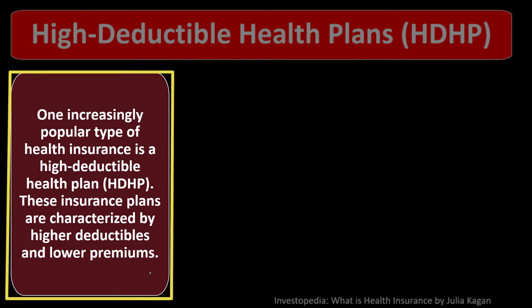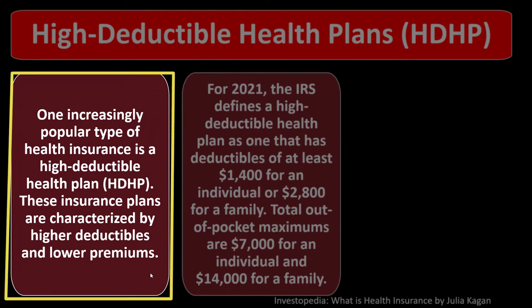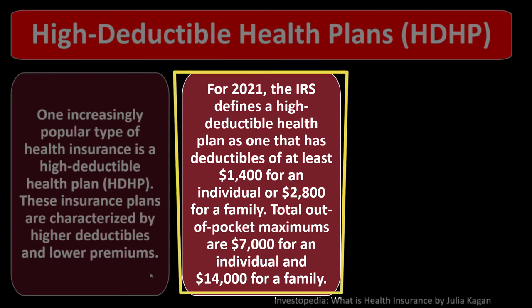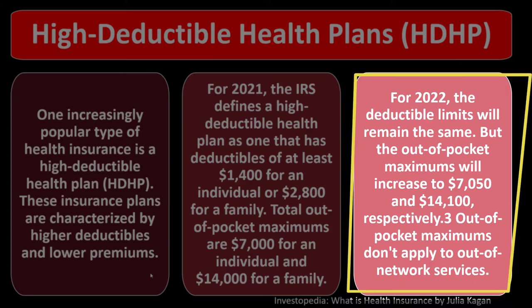High deductible health plans (HDHPs) are characterized by higher deductibles and lower premiums. For 2021, the IRS defines a high deductible health plan as one with deductibles of at least $1,400 for an individual or $1,800 for a family, with total out-of-pocket maximums of $7,000 for an individual and $14,000 for a family. For 2022, the deductible limits remain the same, but out-of-pocket maximums increase to $7,050 and $14,100 respectively.